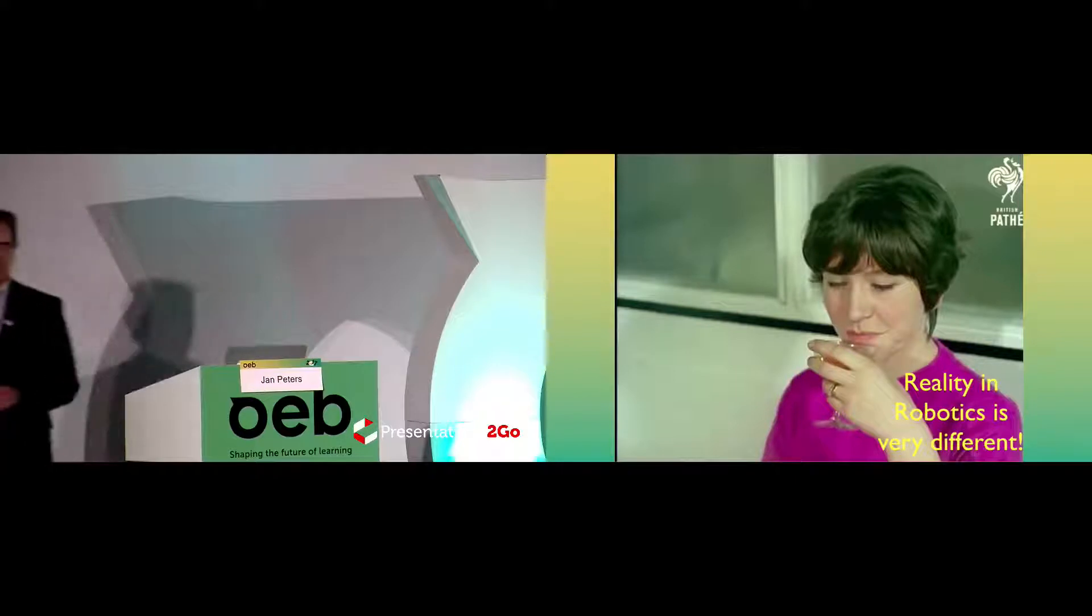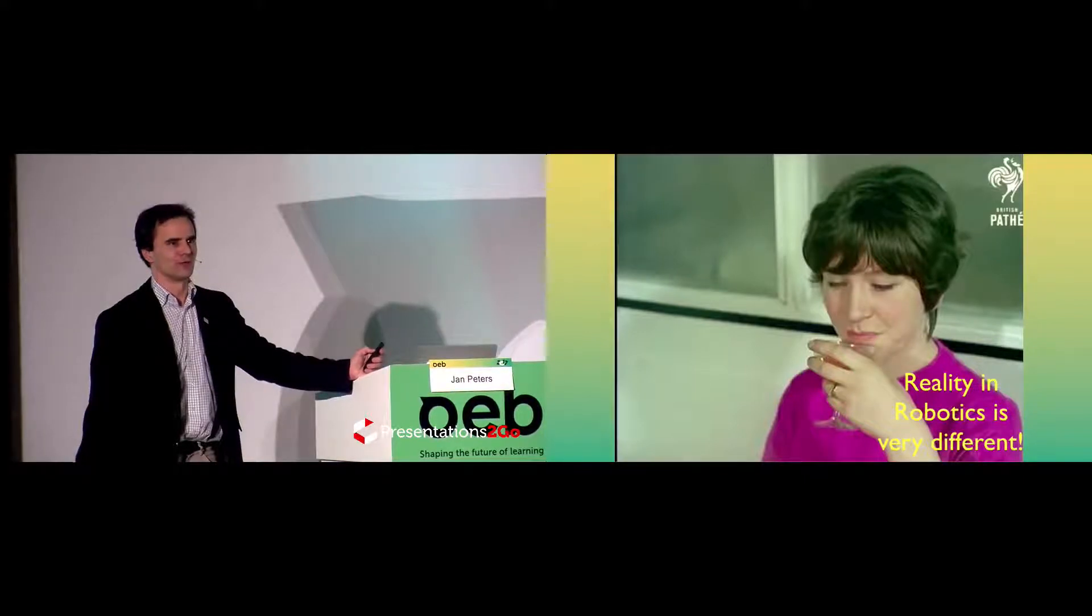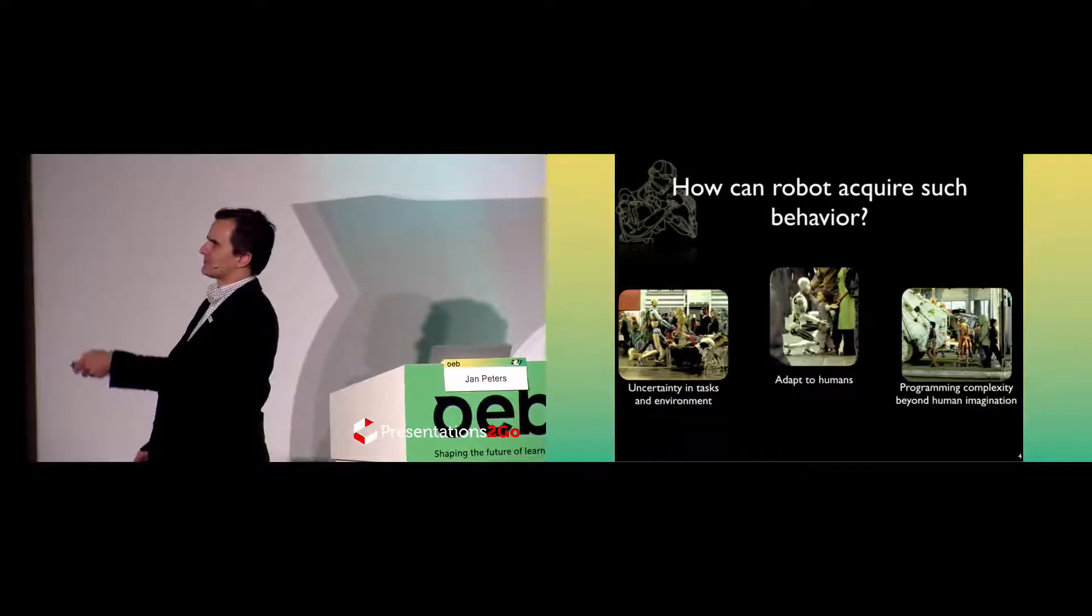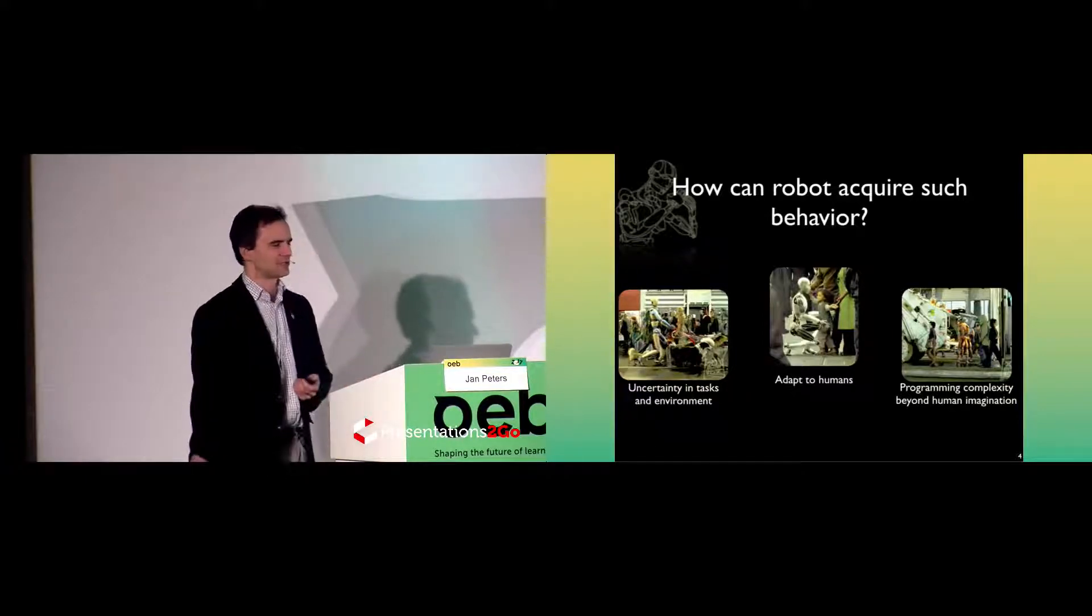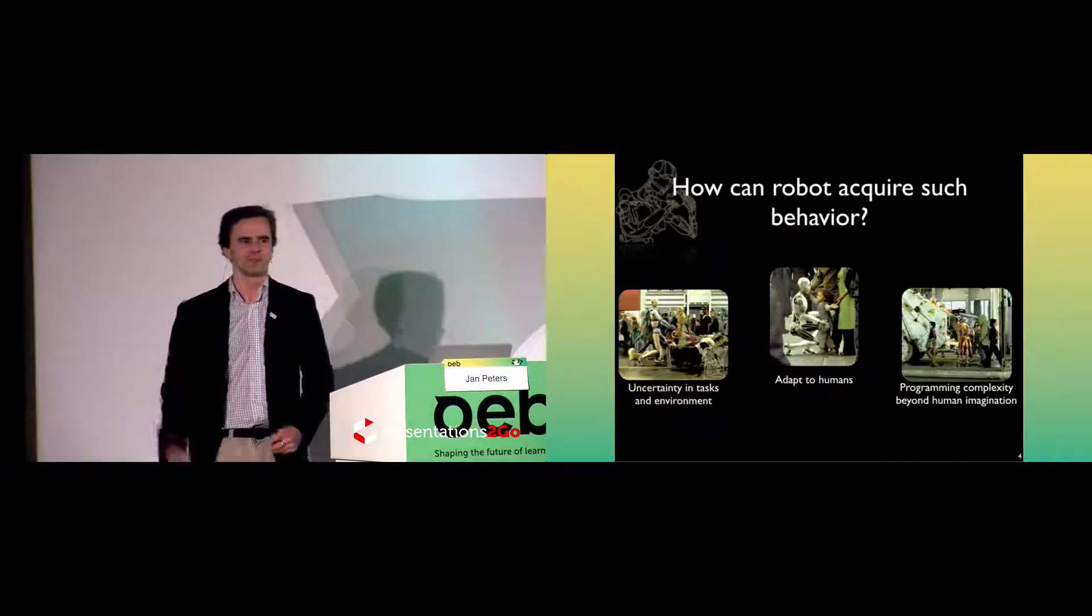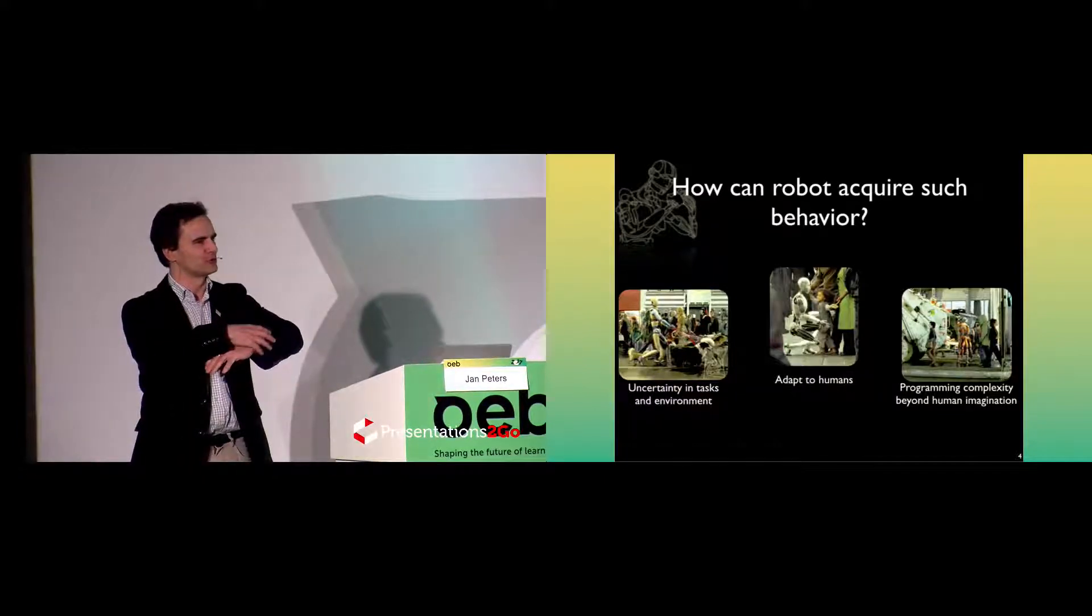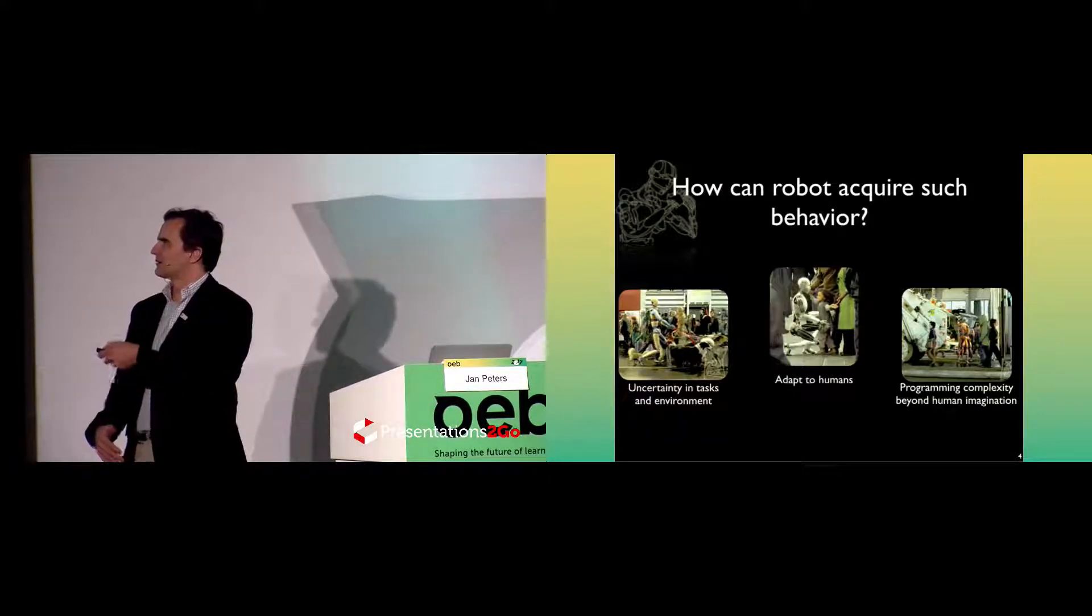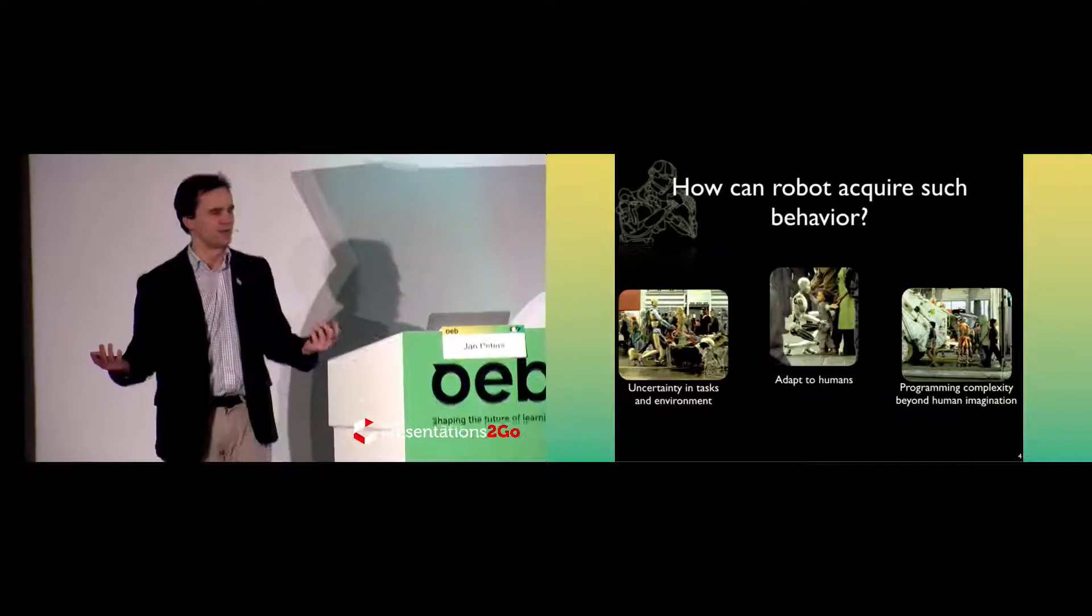The reality in robotics is substantially different from the reality which we would like to have. Let's look at the sci-fi scenario again. Why is this so difficult? We have a lot of uncertainty in the world, and in order to plan for all situations, it's literally impossible. Our robots have to adapt to humans. Finally, you see here a programming complexity of these industrial robots emptying the trash can, which is way beyond any imagination.